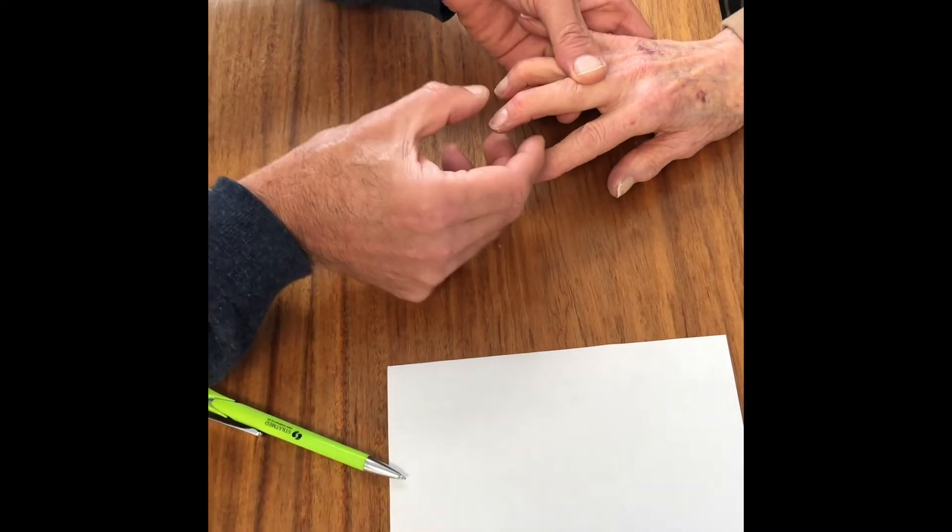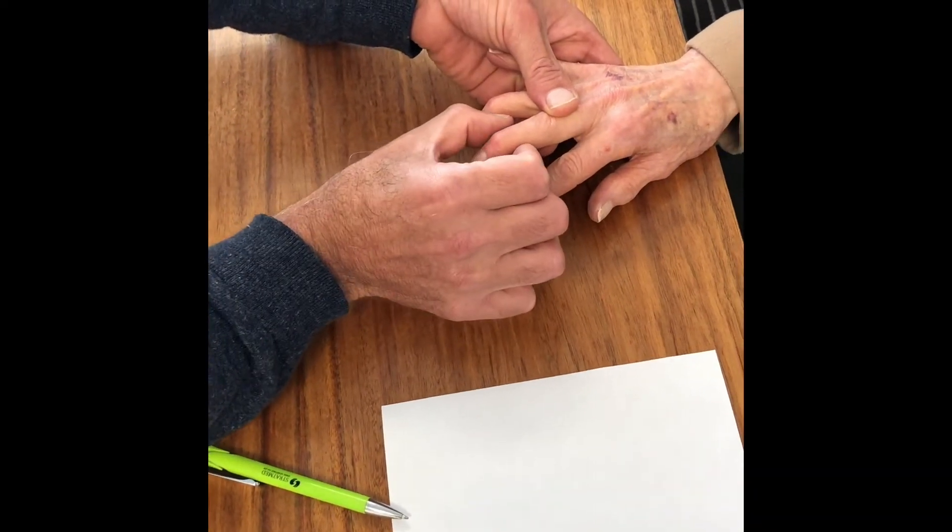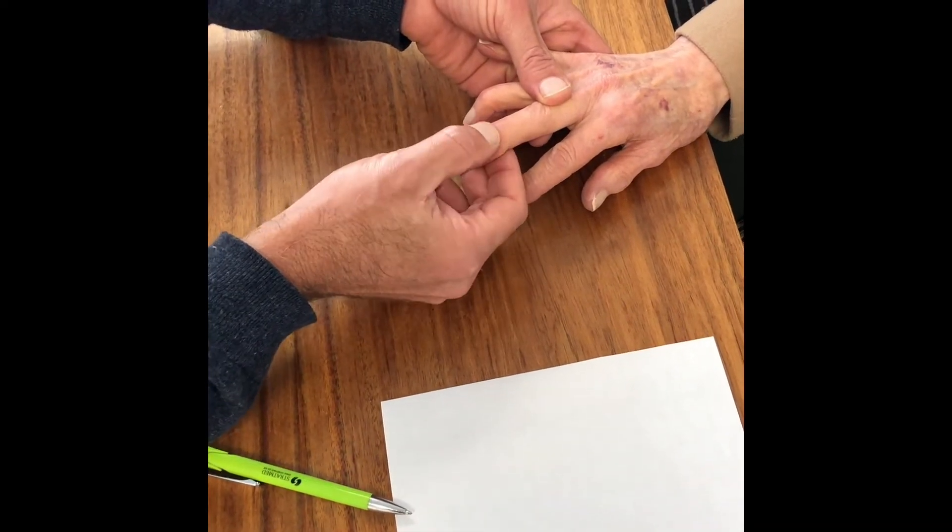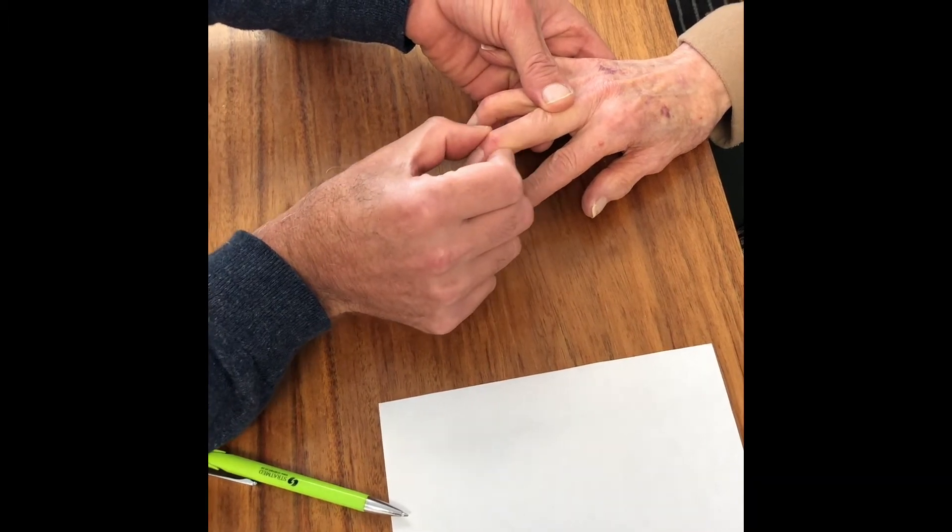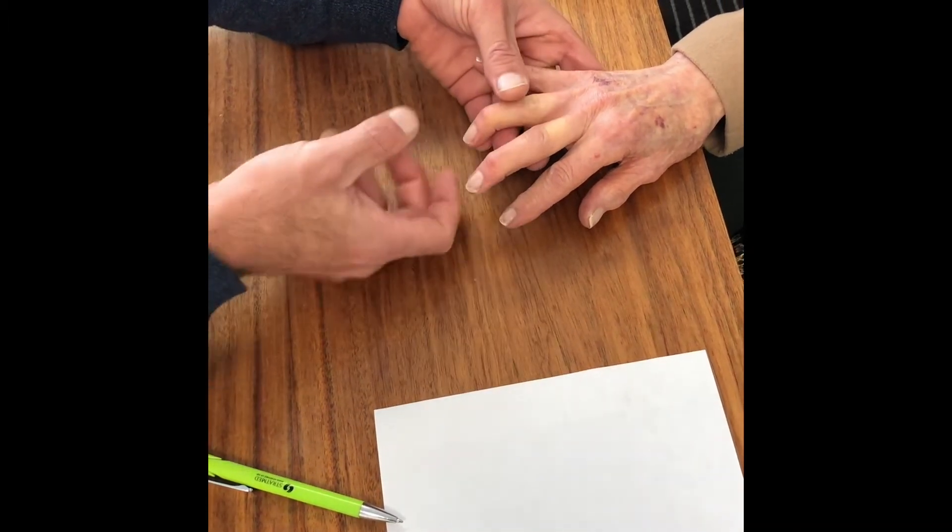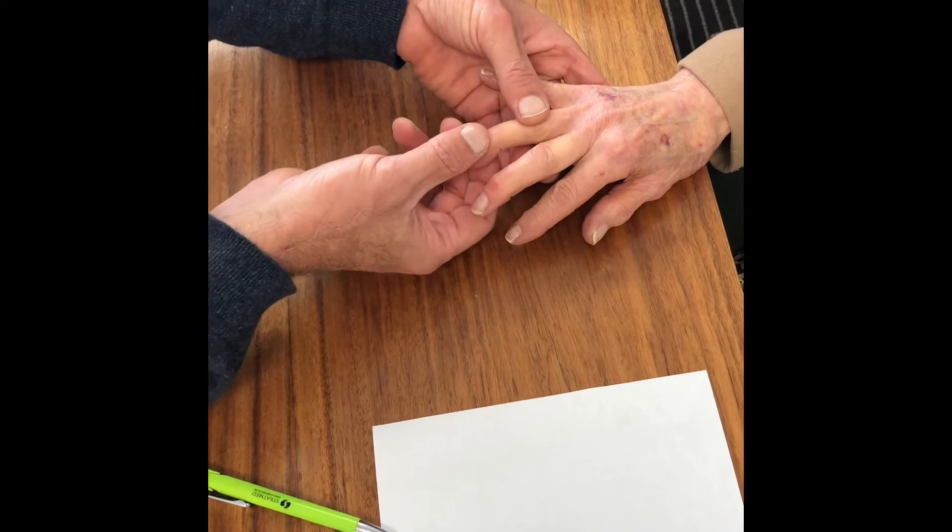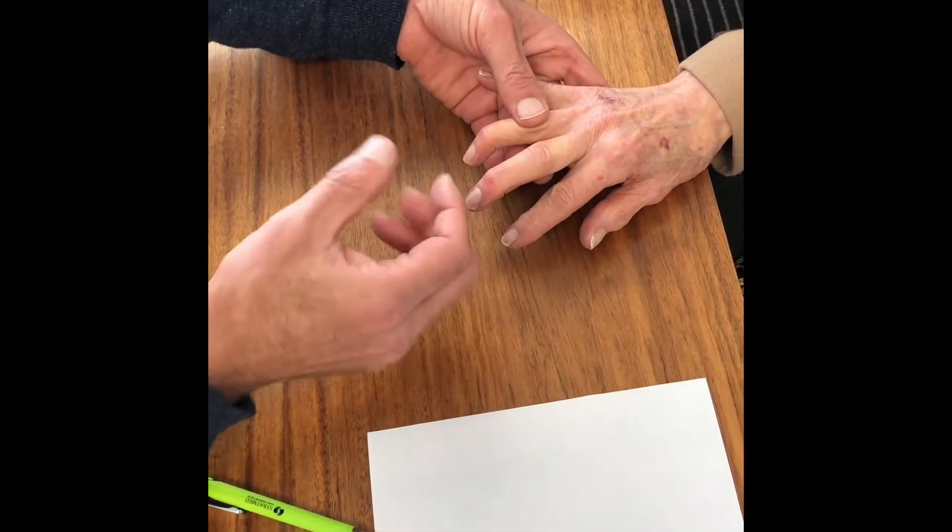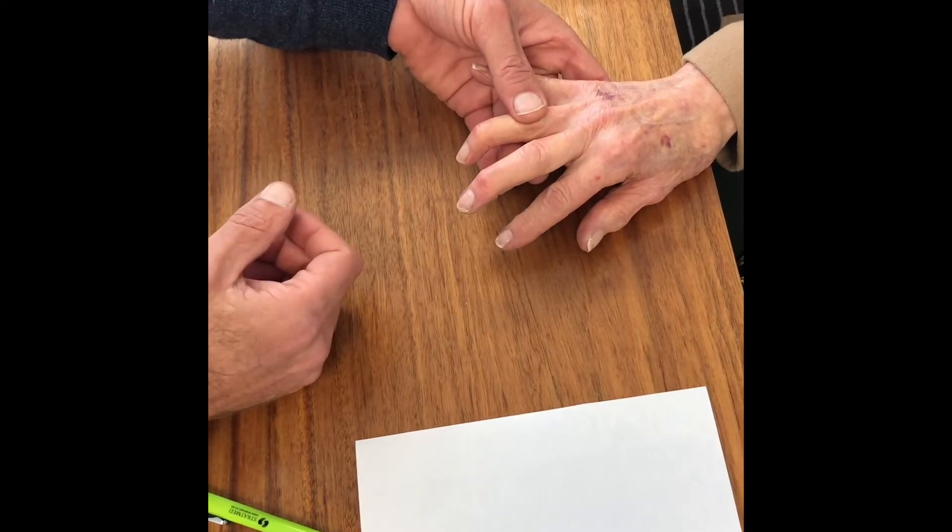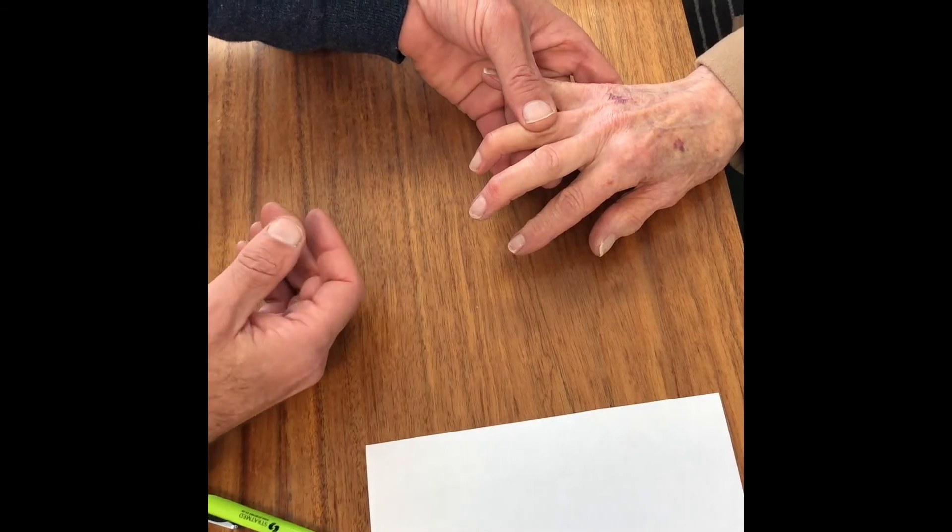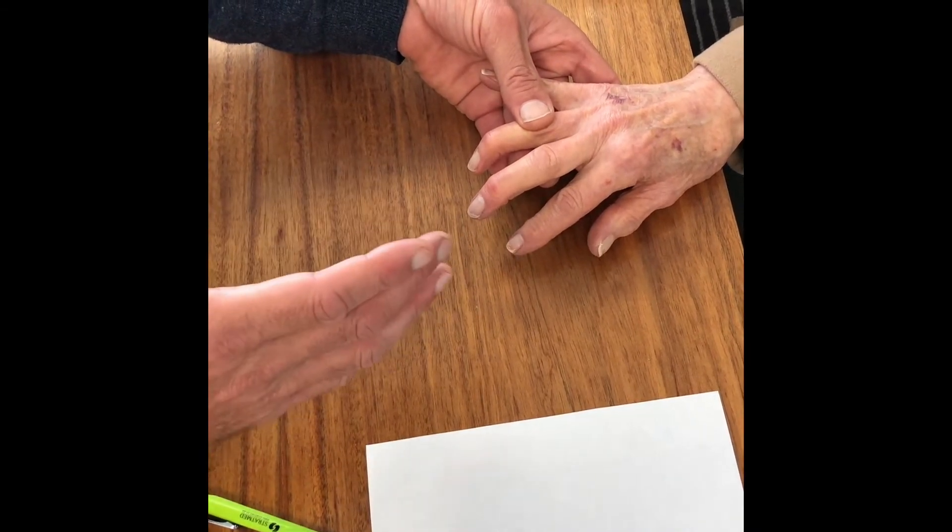When you feel, you're looking to see if there's any tenderness. There's not much tenderness, and the normal bony alignment is within normal limits. There's no dislocation of the joint and no obvious swelling or synovitis. There's no temperature changes.